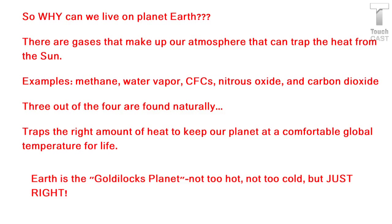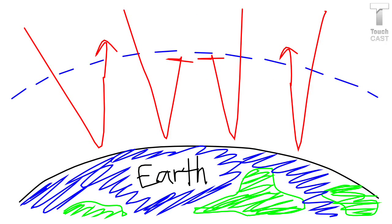Basically, these gases trap the right amount of heat coming in and going out to keep our planet at a comfortable global temperature. Sometimes you'll hear Earth referred to as the Goldilocks planet — it's not too hot, it's not too cold, it's just right. Here you can see a picture of the radiation coming in, some being reflected back out, and the right amount kept in the atmosphere. This is what we call Earth's energy budget: the energy coming in equals the energy let off plus the energy stored.